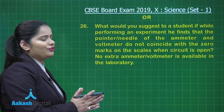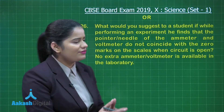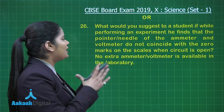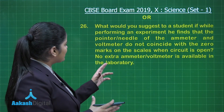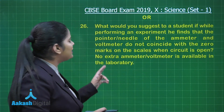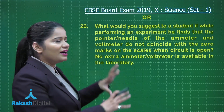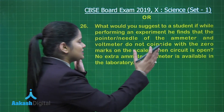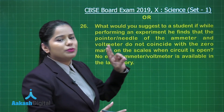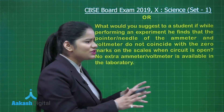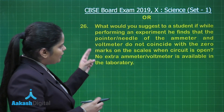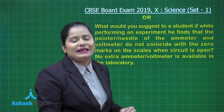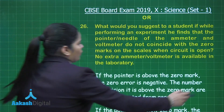Now let's look at the second choice of question number 26, which asks: what would you suggest to a student if, while performing an experiment, he finds that the pointer of the ammeter and voltmeter do not coincide with the zero mark on the scales when the circuit is open, and no extra ammeter or voltmeter is available in the laboratory? Do not suggest changing the instruments, as the question already states none are available. This question is about zero error.